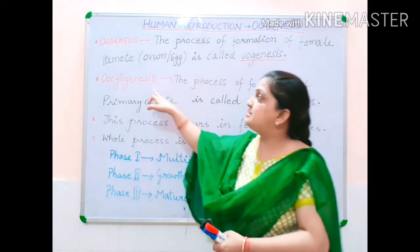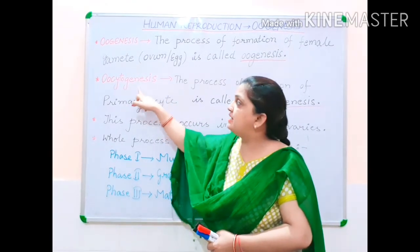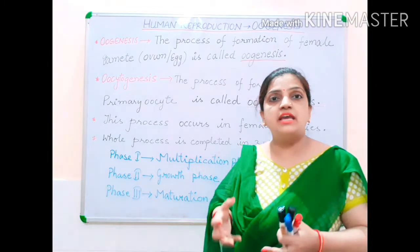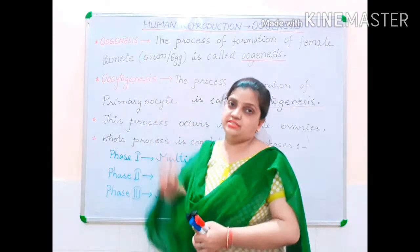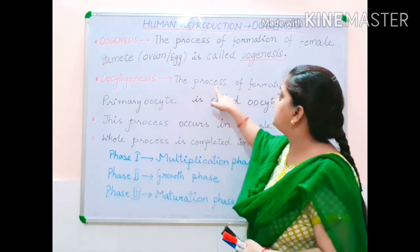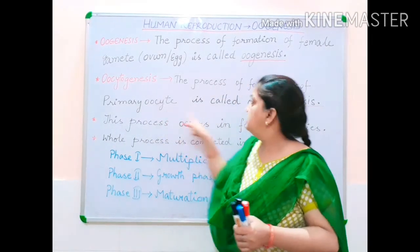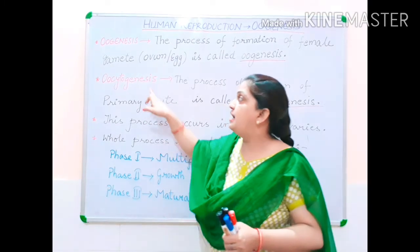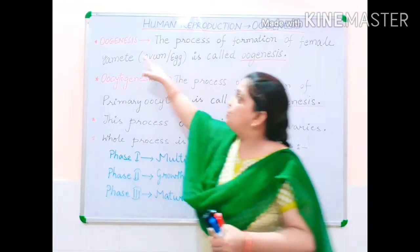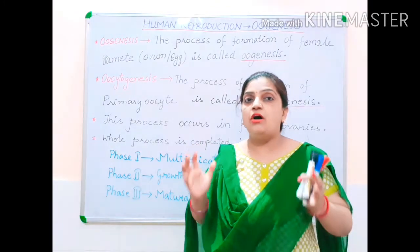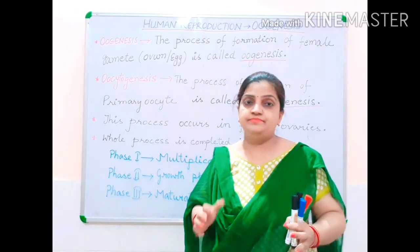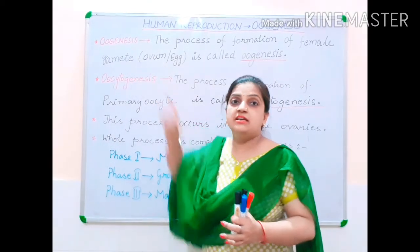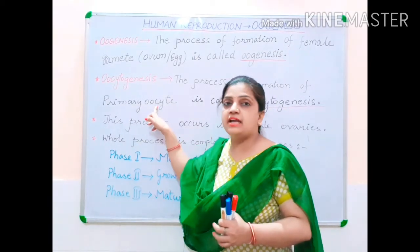There is another related term: oocytogenesis. Oocytogenesis is a process that takes place within oogenesis — specifically, it is the process of formation of the primary oocyte. The difference is that oogenesis is the complete process of egg formation, while oocytogenesis is just the part in which the primary oocyte is produced.